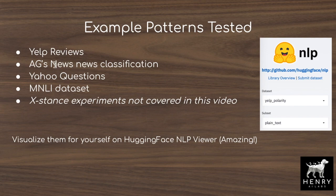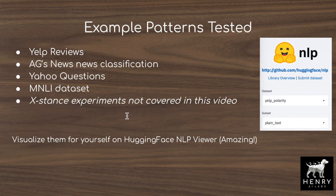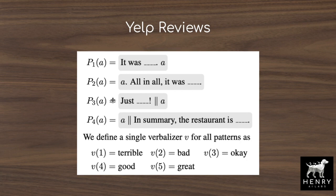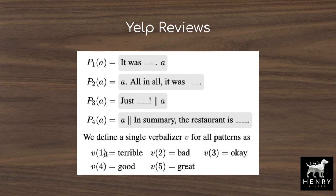The datasets tested include Yelp reviews, AG's News news classification, Yahoo questions (another category classification task), and a natural language inference dataset. These can be visualized on Hugging Face's NLP viewer. The different patterns tested for Yelp reviews include 'it was [MASK]' before the review, the review followed by 'all in all, it was [MASK],' and just '[MASK]!' The verbalizer maps outputs like 'terrible' to label 1, 'bad' to 2, 'okay' to 3, 'good' to 4, and 'great' to 5 — a one-to-five star rating system.